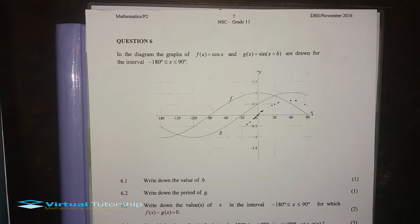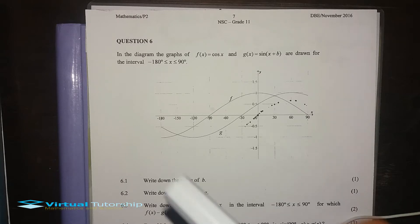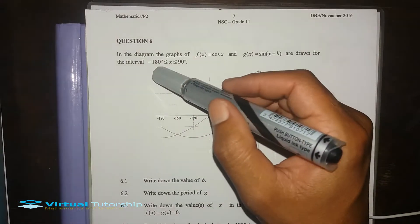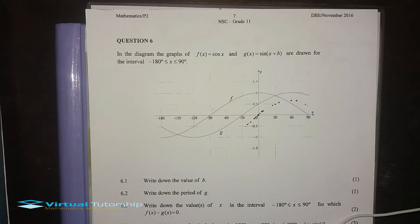Okay, I'm going to go to Question 6. Grade 11, November 2016. We have trigonometric functions. The graphs of f of x and g of x are drawn for the interval of minus 180 degrees to 90 degrees. We will draw the same set of axes — minus 180 to 90 degrees.